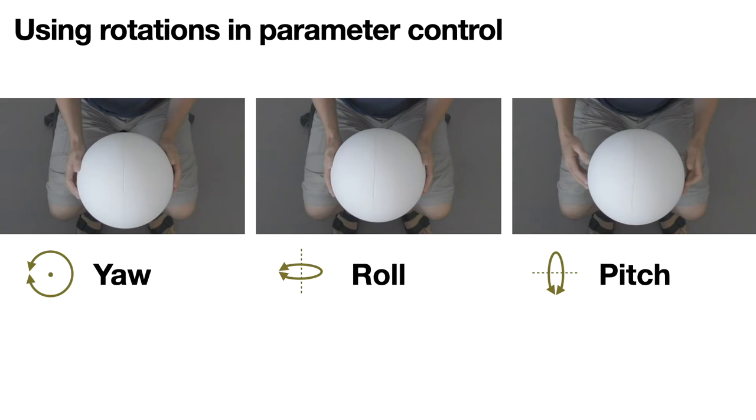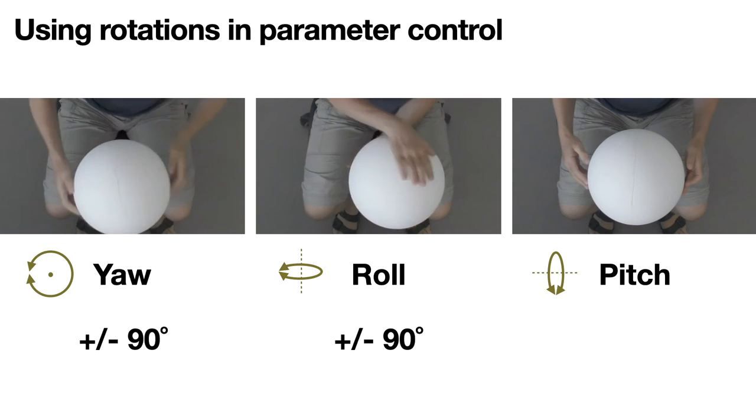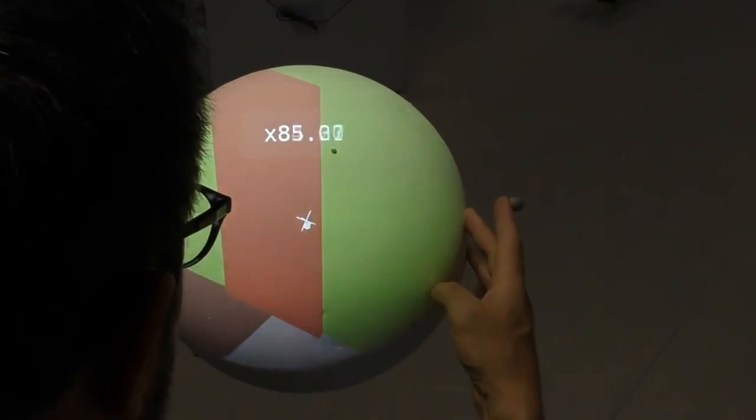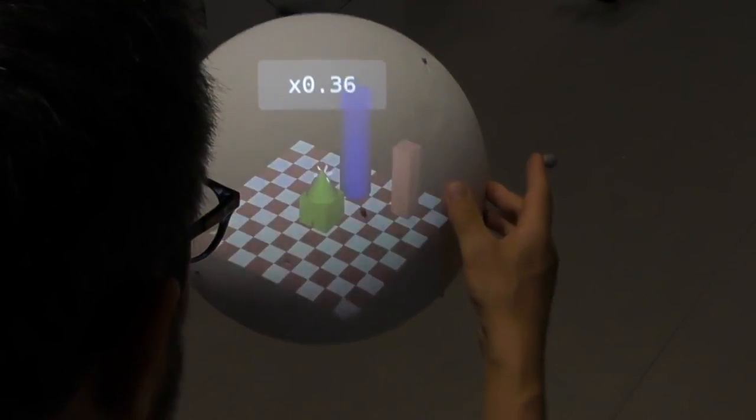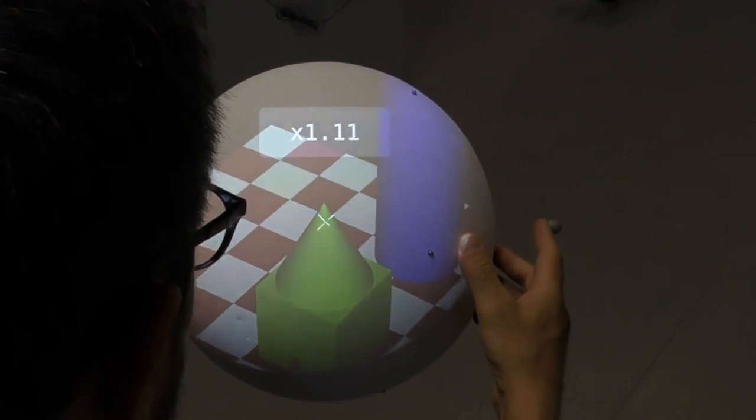We tested display rotations for scalar parameter control. The yaw and roll rotations only afford small rotations and suffer from occlusions. Pitch affords much larger rotations, with no occlusion. We used pitch to control the zoom factor of the scene. Translations don't interfere with rotations, so we used them to continuously update the zoom center.